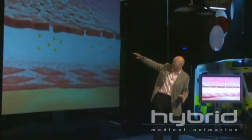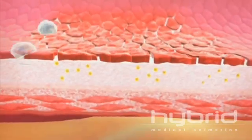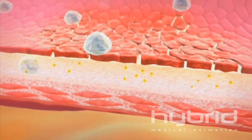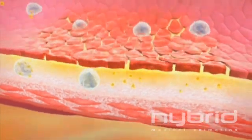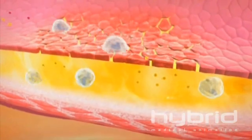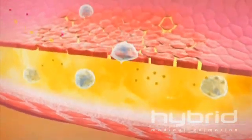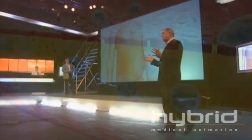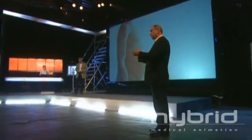Below the endothelium — the vessel lining — these yellow blobs represent LDL cholesterol, the bad stuff. Normally it is moving in and out of the endothelium if cholesterol is low enough. But under certain circumstances it gets trapped underneath, and as it does so, these big white and blue blobs — migrating white cells — come through the damaged lining.